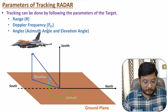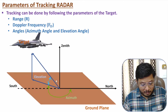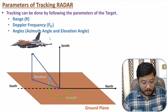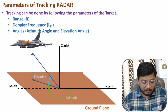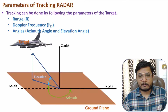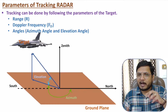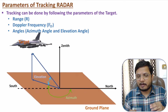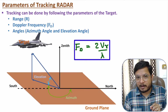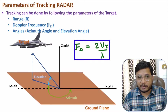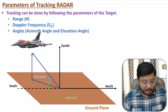The second parameter is Doppler frequency. If this target is in motion, then the echo signal received by the radar will have a frequency deviation. Based on that frequency deviation, we can identify the relative velocity of the target. Relative velocity can be calculated based on Doppler frequency — that is fd equals 2vr divided by lambda, where vr is relative velocity. So based on Doppler frequency, radar can identify motion of the target.